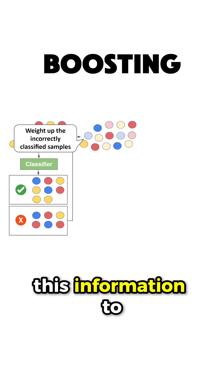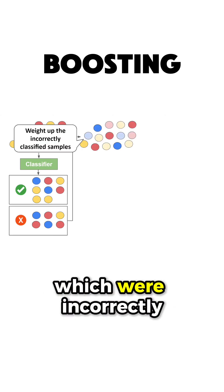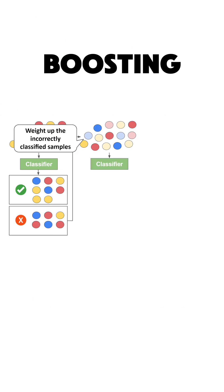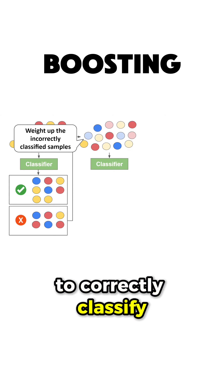Then you use this information to weight up the samples which were incorrectly classified by the model, so that when you train the next model, it pays more attention to those samples and hopefully learns to correctly classify them.